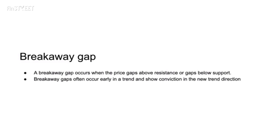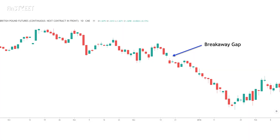There are two key refinement points about the breakaway gap. First, a breakaway gap occurs when the price gaps above resistance or gaps below support. In simple language, whether the breakaway gap comes in an uptrend or downtrend, the price will either gap above resistance or below support. That is the first point.